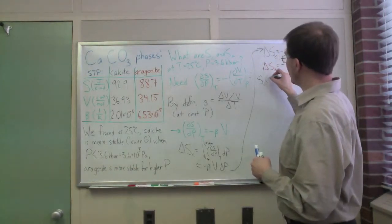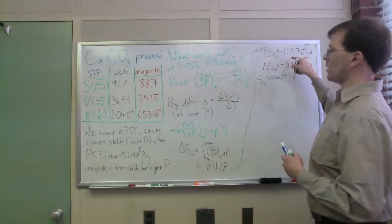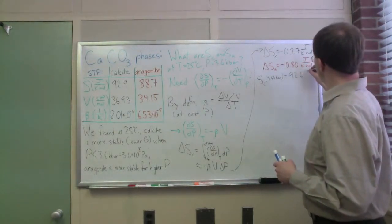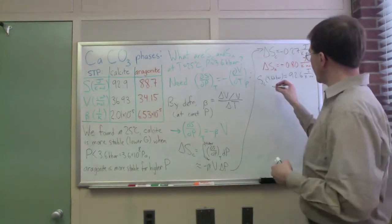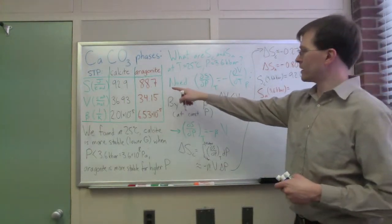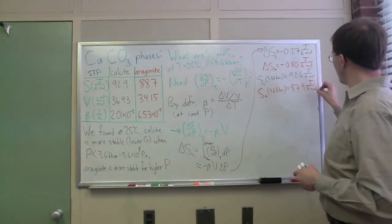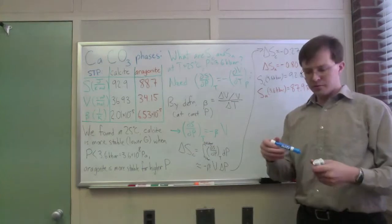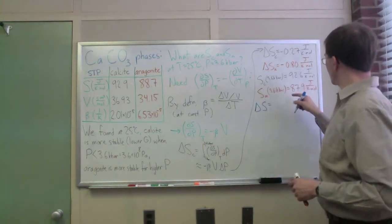This means that S_c measured at 3.6 kilobar is equal to 92.9 minus 0.3—that gives me 92.6 joules per Kelvin per mole. Then I can do a similar thing: S aragonite at 3.6 kilobar equals 88.7 minus 0.8, which gives me 87.9 joules per Kelvin per mole. Suddenly my delta S, the difference between those two S's, ends up being 4.7 joules per Kelvin per mole.